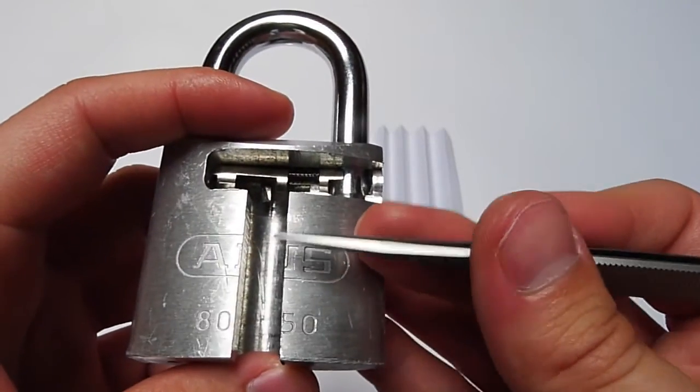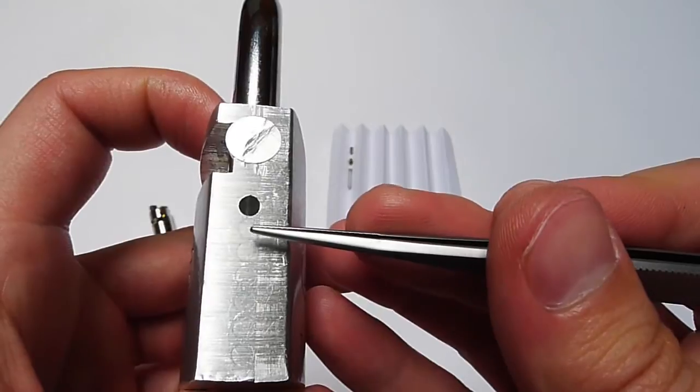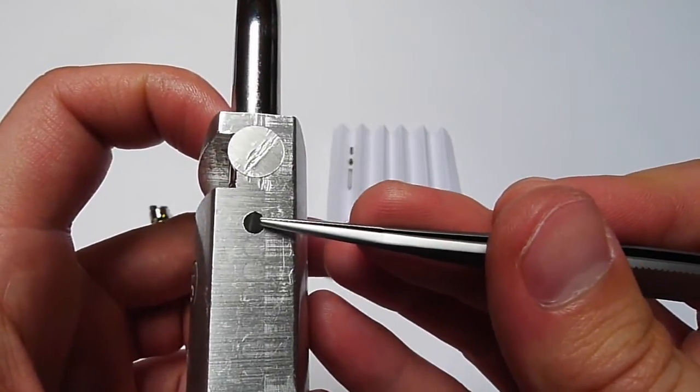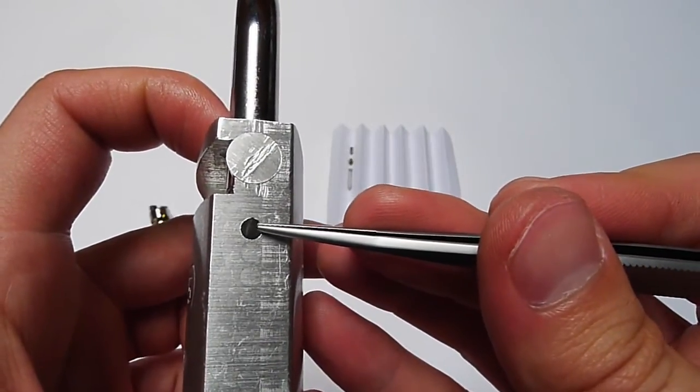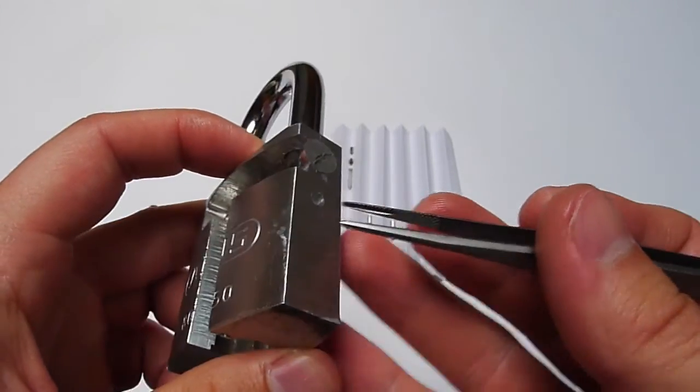If you want to remove the core yourself on your Titalium padlock, you would have to make a drill hole here at the position of the seventh pin and drill out the seventh pin that holds the core in place.